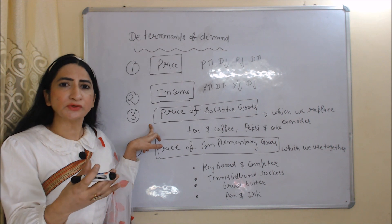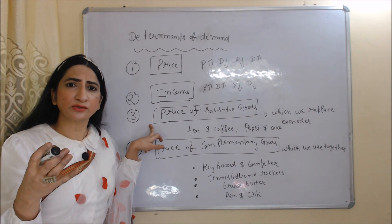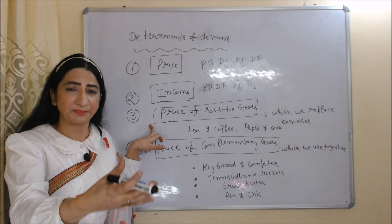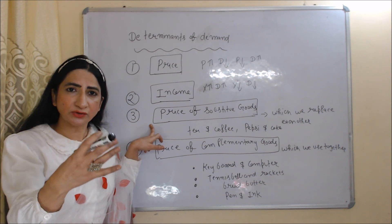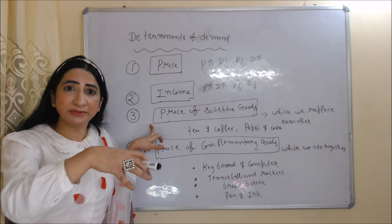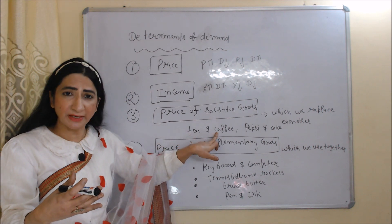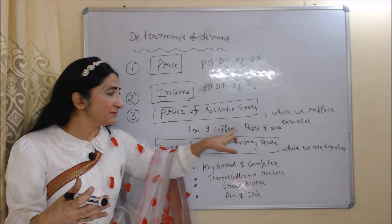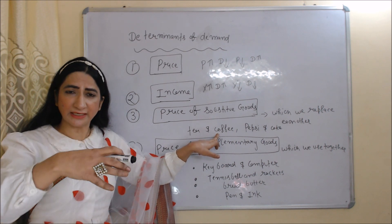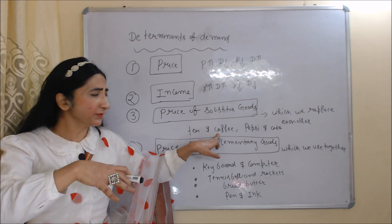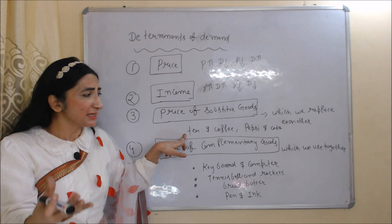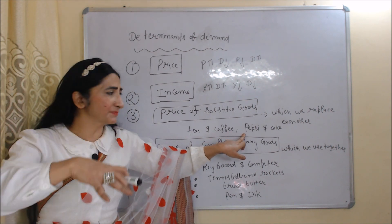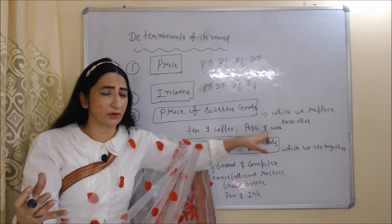Next is price of substitute goods. Substitute goods are those goods which we can replace with each other. For example, we can replace coffee with tea, and we can replace Coke with Pepsi. If price of coffee will increase, we will reduce the demand of coffee and increase the demand of tea. Similarly, if price of Pepsi will increase, we reduce the demand of Pepsi and increase the demand of Coke.